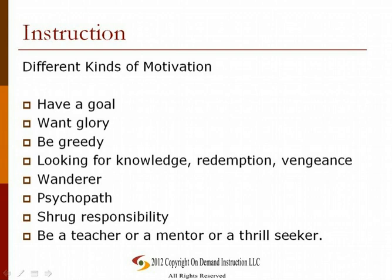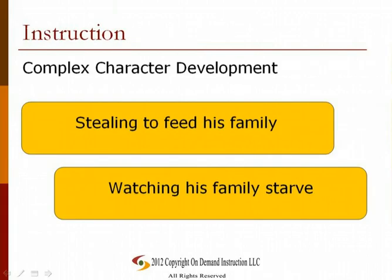A character can also have conflicting motivations — for example, having to choose between stealing to feed his family and watching them starve. The development of a complex character can come from its motivations. If in the course of the story this character got caught by the police, he could develop into a hardened criminal in prison and become further involved in criminal activities. On the other hand, he may be so torn about having to steal that he doesn't go through with it and decides on another course of action that saves his family without becoming a criminal. These are examples of how a complex character could develop.